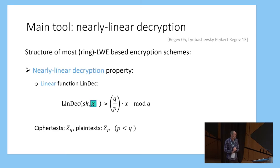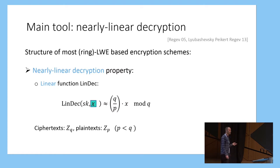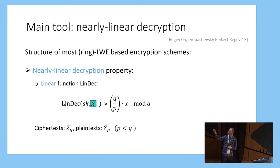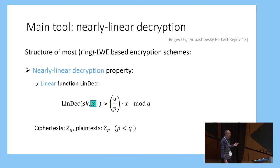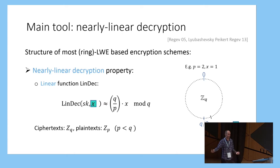In our construction, the main tool we use is an abstraction of most lattice-based encryption schemes with a property we call nearly linear decryption. If you take pretty much any encryption scheme based on LWE or ring LWE and look at the decryption equation, it always has this nice property that you can divide it into two parts: a linear part which we call lindec, and a non-linear part. The linear part takes as input the secret key and a public ciphertext encrypting some value x, and ends up with an approximation of q/p times the message, where q is the ciphertext modulus and p is the plaintext modulus. The second part of decryption recovers the message by rounding to the nearest multiple of q/p and then scaling down to recover x modulo p.